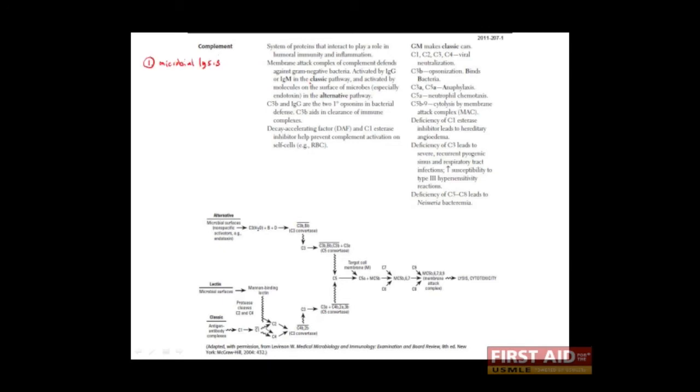There's a lot going on this slide, but there's really two main purposes of the complement cascade. The first is microbial lysis, or microbial killing. As you'll see, complement by itself can actually kill microbes. And I'll explain that in a moment. The second is immune cell recruitment.